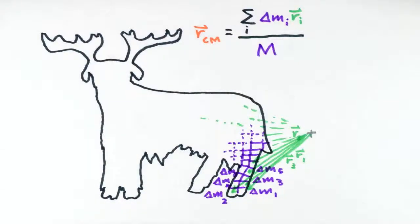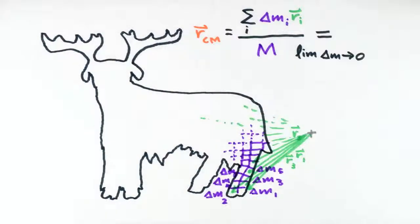In the limit that the delta m sub i's become differential elements of mass dm, the sum becomes an integral. Physically we're still doing the same thing. A weighted average performed by summing up the positions of each piece weighted by its mass and dividing the total sum by the total mass.